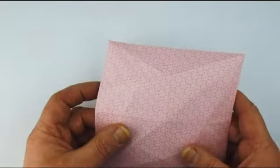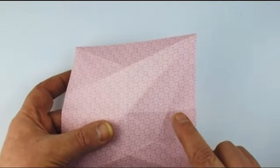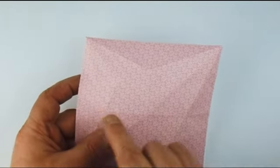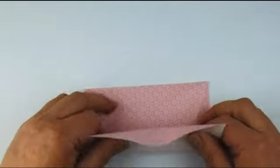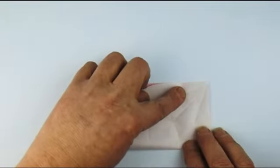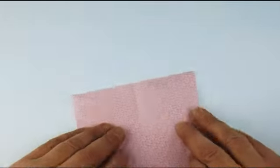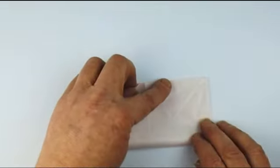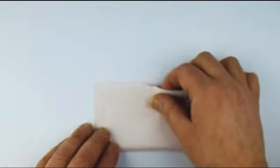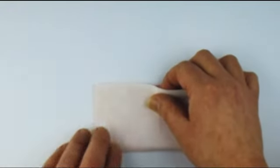Now return to the coloured side and we're going to do a similar process. We're going to take this mountain here and make it a valley. Same in this direction. These creases just help the thing take shape.